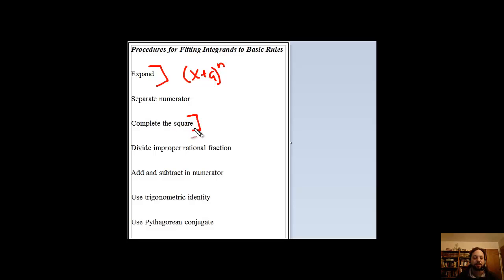If you see part of what looks like a binomial squared in the denominator, consider completing the square. Dividing improper rational fractions will generally lead to a polynomial plus something over the numerator, which a lot of times can be integrated with a natural log. But you have a very nice polynomial to work with then. Adding and subtracting from the numerator, not entirely common. Using a trigonometric identity, not entirely common. Using a Pythagorean conjugate, not entirely common. But they're all good techniques to know.